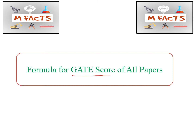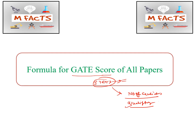After qualifying the GATE exam we will get a scorecard which is valid for three years. In that GATE scorecard they mention three things: the number of candidates who appeared in that year, the qualifying marks for every category, and the validity period — this is basically three years.